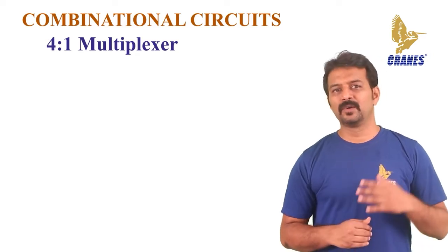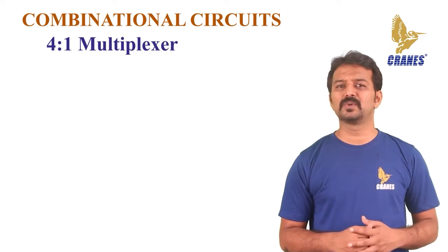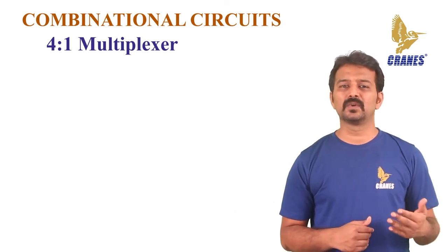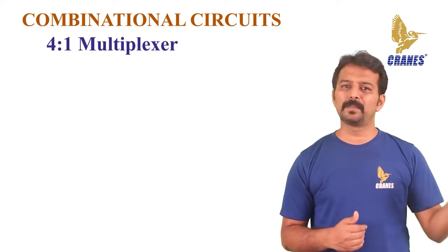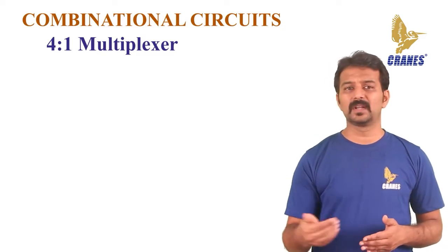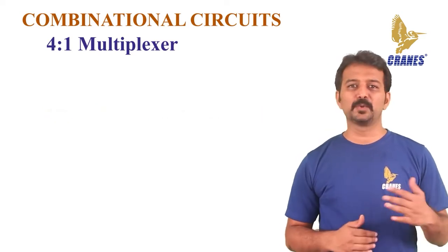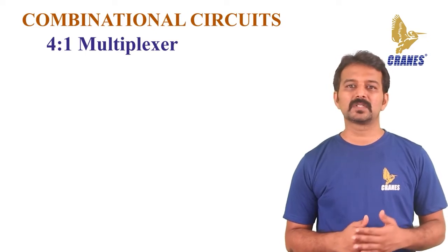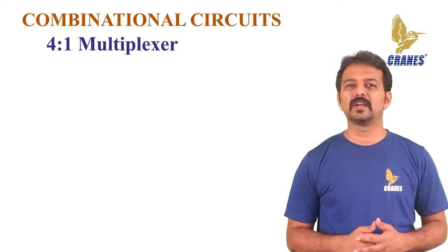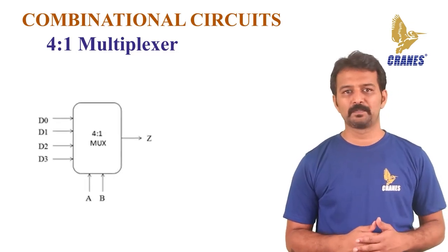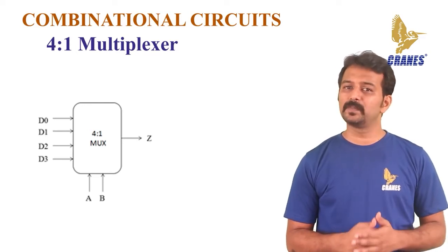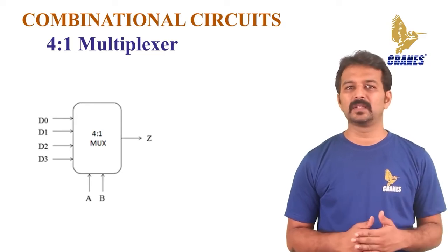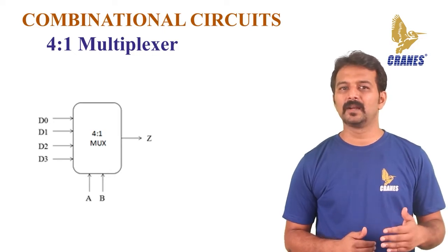Let us look at the 4-to-1 multiplexer. Once you have understood the working of a 2-to-1 mux, it should be easy to understand the 4-to-1 mux. It will have 4 input pins, 1 output pin, and 2 control lines. These 2 control lines can form 4 different combinational logic signals, and for each signal, one particular input will be selected. For instance, a 2-to-1 multiplexer has 1 control line, and a 4-to-1 multiplexer has 2 control lines. In a 4-to-1 mux, there are 4 input lines and 1 output line, and 2 selection lines to control which input is selected. The symbol shows D0 to D3 as the 4 input lines, A and B as the select lines, and Z as the output.